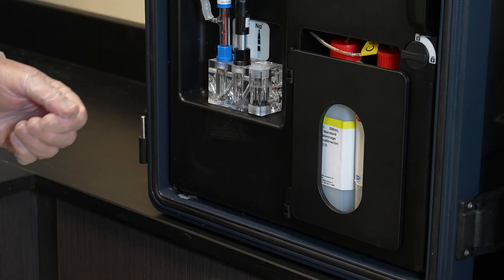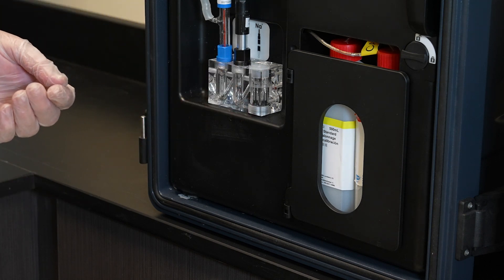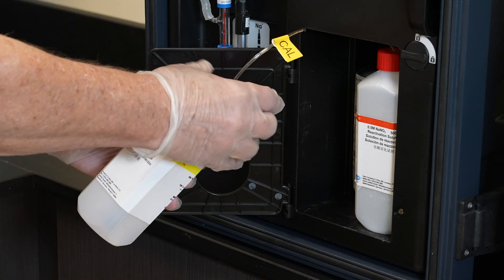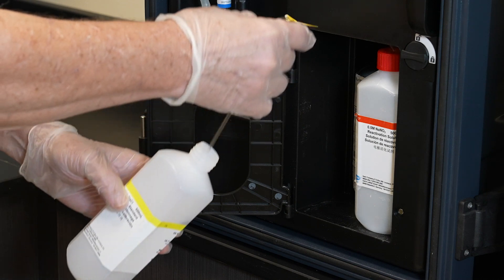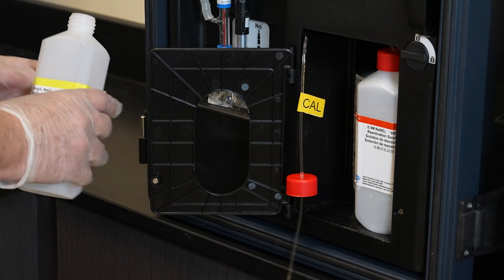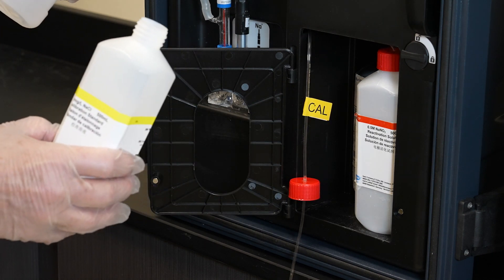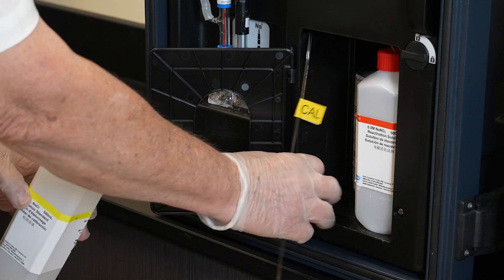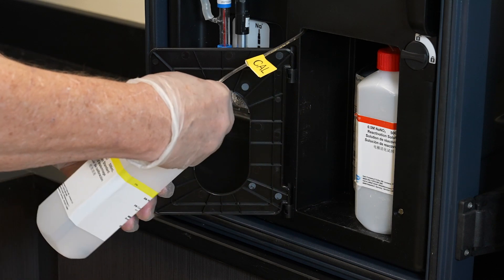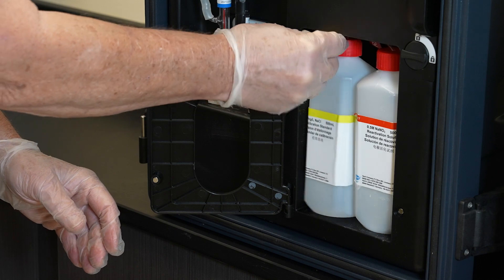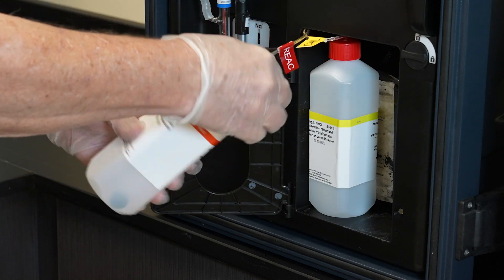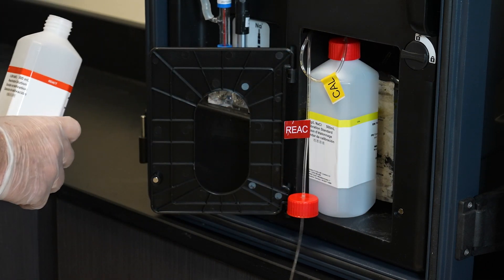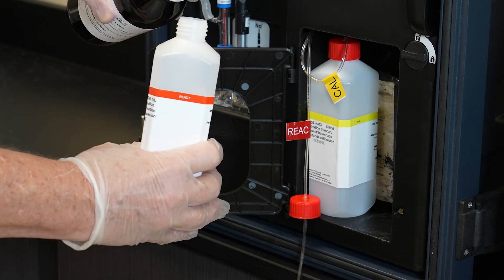Now to refill our bottles for the calibration standard and the reactivation solution we would simply open this door. In the case of our calibration we would undo the lid carefully, set this down and then choosing our calibration standard, this case the 10 milligram per liter, we would fill up the bottle. Now we take our reactivation bottle and then we would fill this up with the sodium nitrate reactivation.